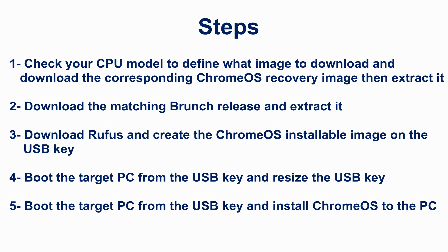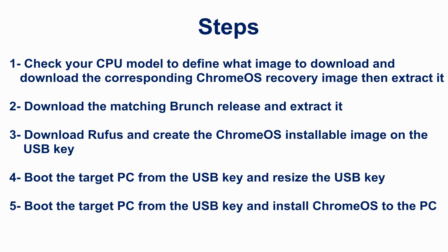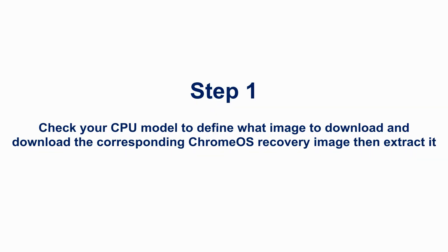After downloading the Chrome OS image that corresponds to your CPU, you need to download the matching branch release and extract it. Then download Rufus and create the Chrome OS installable image on the USB key. The first step is to boot the target PC from the USB key and resize the USB key, then boot once more to install Chrome OS on the target PC.